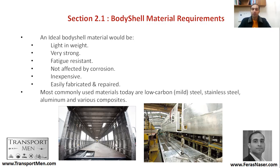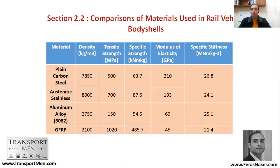The most common materials used today are steel, stainless steel, and aluminium. Looking at a comparison of materials used in real vehicle body shells, we have steel, austenitic stainless steel, aluminium alloy, and glass fiber reinforced polymer.